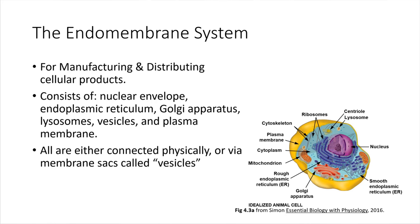Inside of the cell there are a few organelles that have to interact with each other and work together, and all of them are built from membranes. They have membranes that sort of enclose them, so we're going to refer to all of these together as the endomembrane system. It's inside of the cell and all these organelles involve membranes. What they all do is work together in order to manufacture and distribute things that the cell needs to be able to use. We've already met a little bit of the endomembrane system — the nuclear envelope.